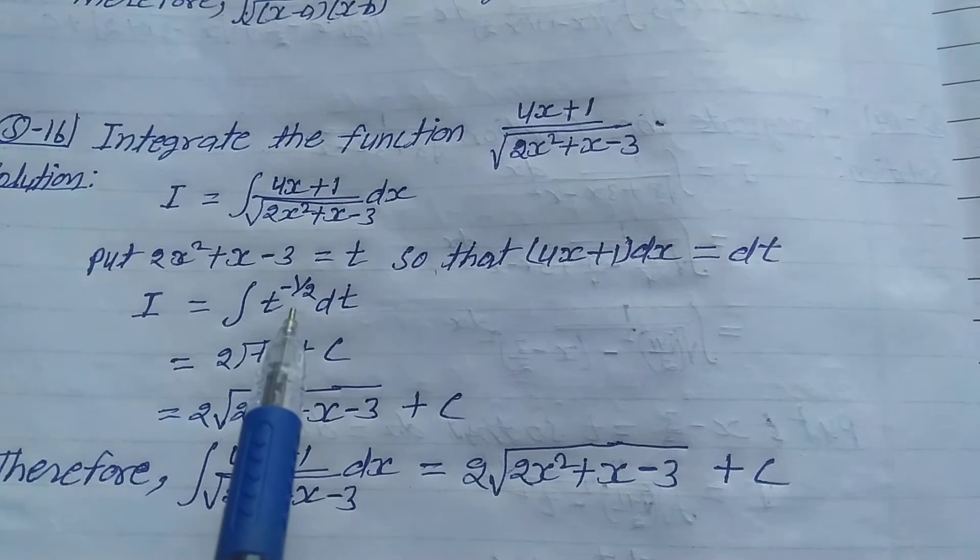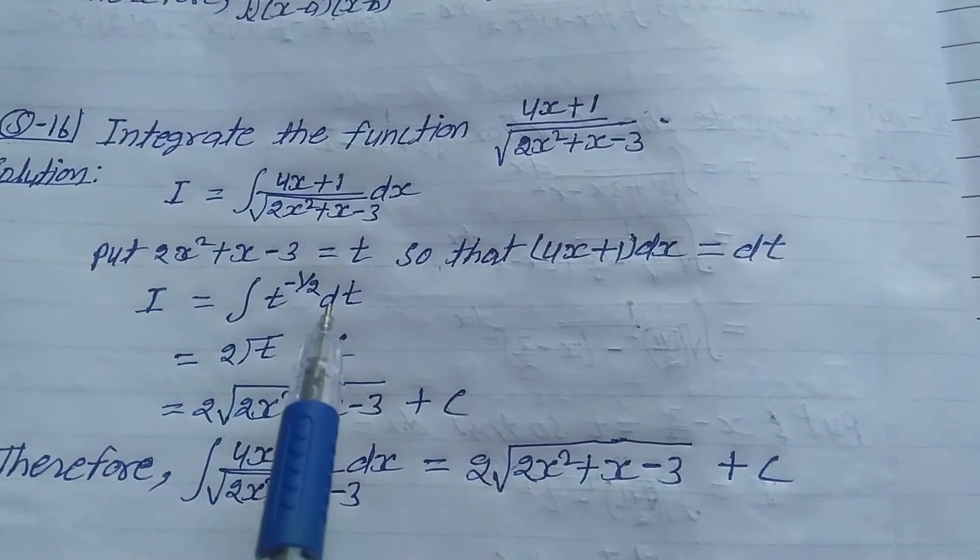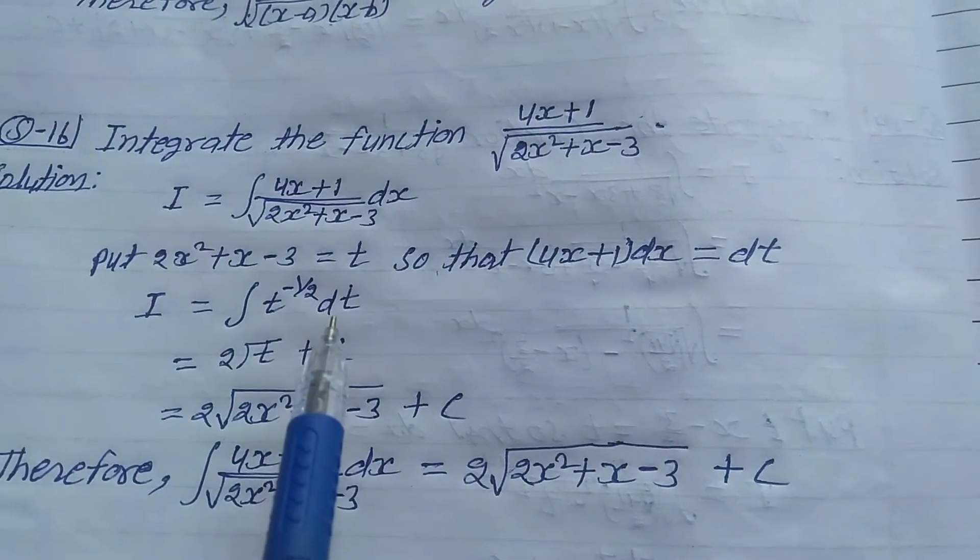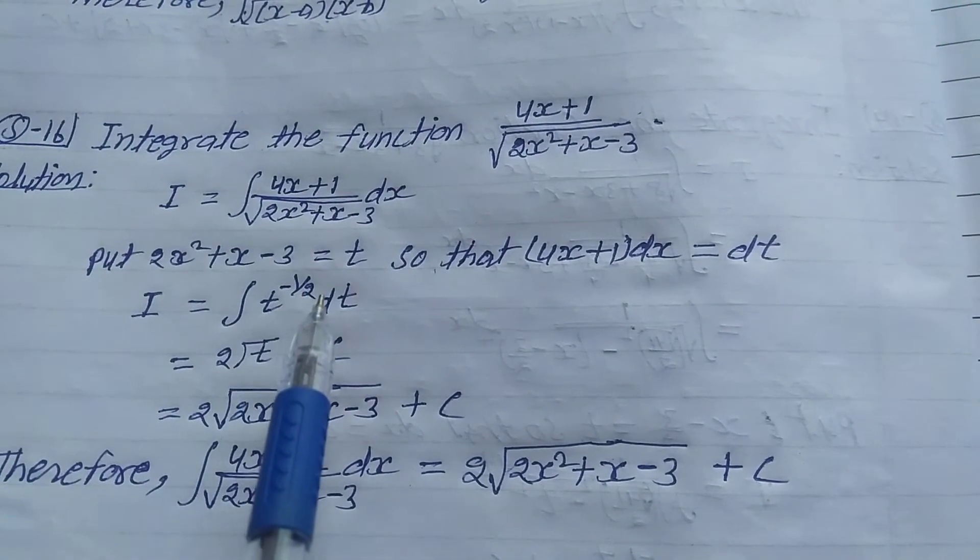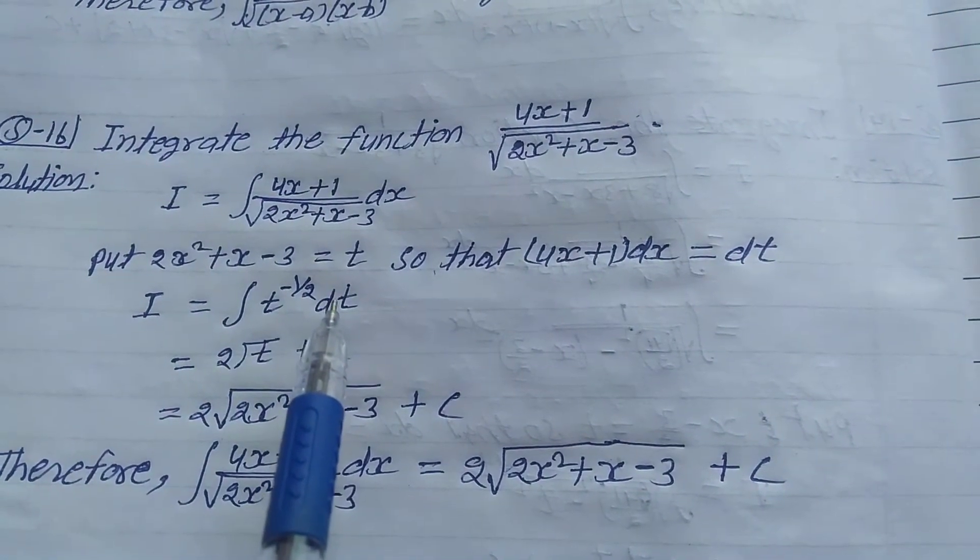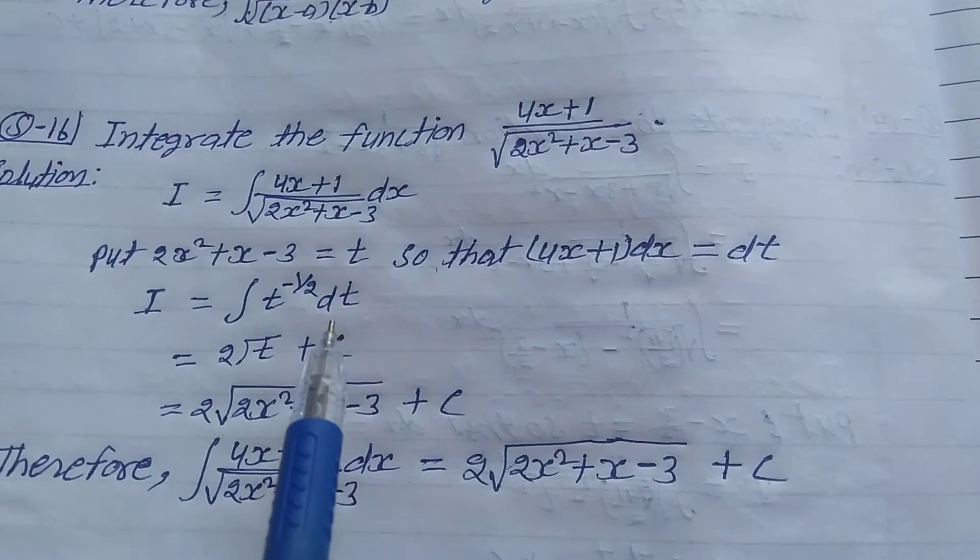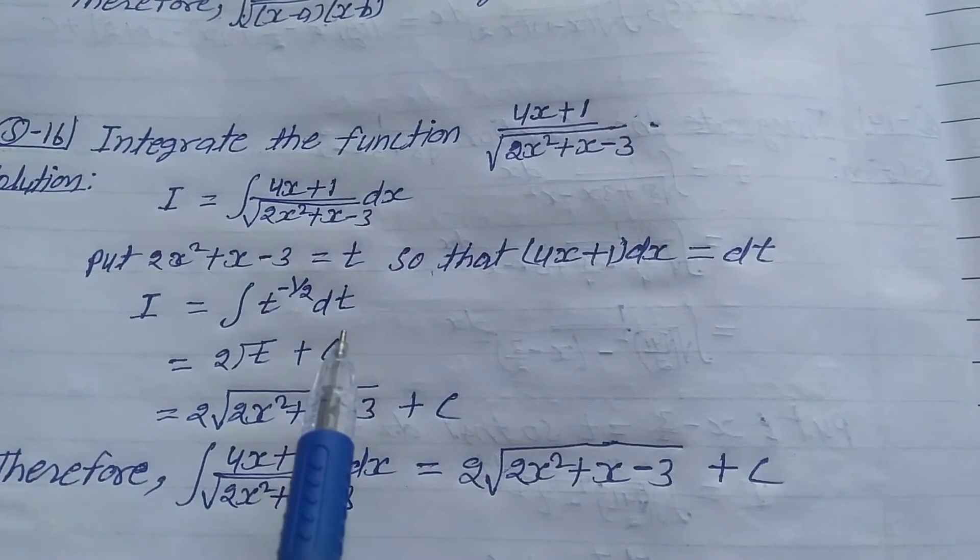So integration of t power of -1/2 is 2 root of t, because t power of -1/2 integration is t power of (-1/2 + 1) upon (-1/2 + 1).